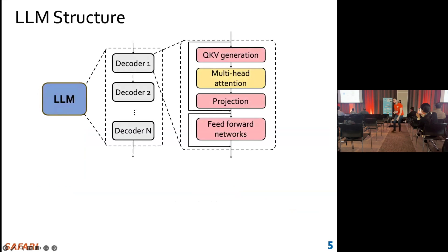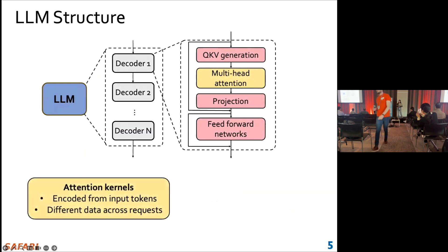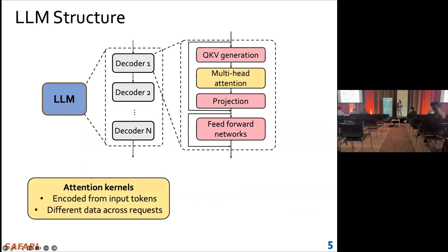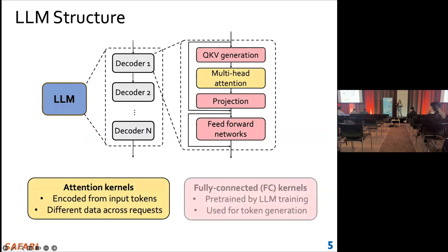There can be two types of layers. The first one, the yellow layer, corresponds to the attention kernels. Usually they are encoded from input tokens and have different data across different requests. And the pink layers are called fully-connected kernels; they are trained by LLM training and can be shared for token generation across different requests.